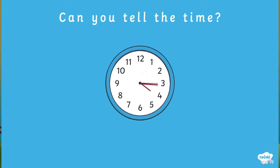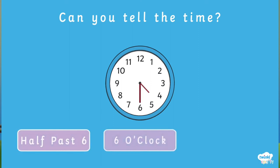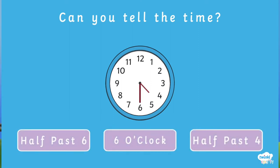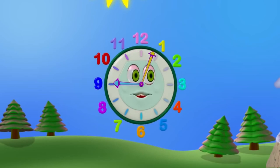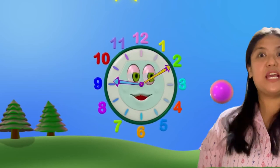What is the time now — is it half past six, six o'clock, or half past four? It's not six o'clock because the minute hand isn't pointing to twelve. It's not half past six because both hands would be pointing at six. It's half past four! Well done!